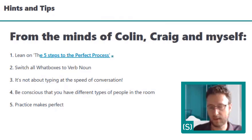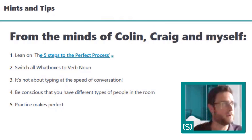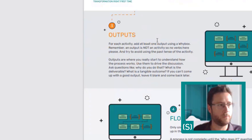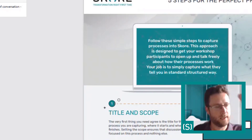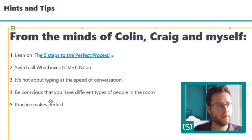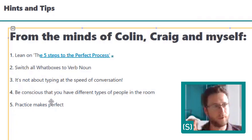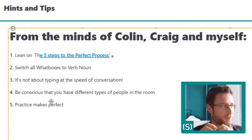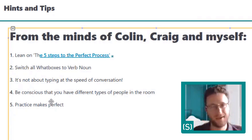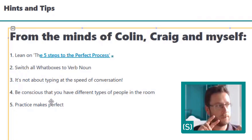My top tip for mapping at the speed of conversation is to follow the five steps to the perfect process. We've got drop-ins running on that and a one-pager available. It's really about the methodology — it outlines the simple steps to run a workshop: setting the scope, putting the activities in, identifying the why boxes, then hooking it up. If people pull you away from that, especially mapping more than one thing at a time, it will slow things down. I strongly advocate learning the five steps and leaning on them — it's a tool for you as facilitator as much as for attendees.